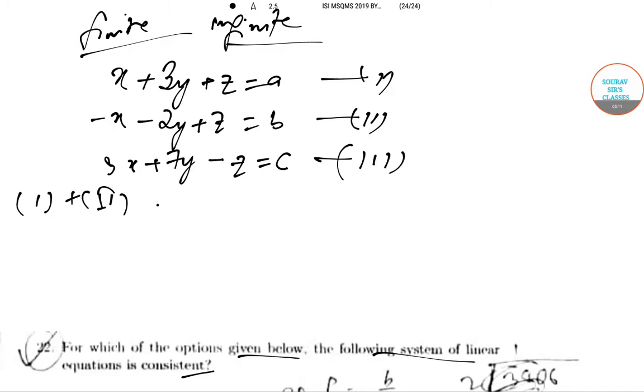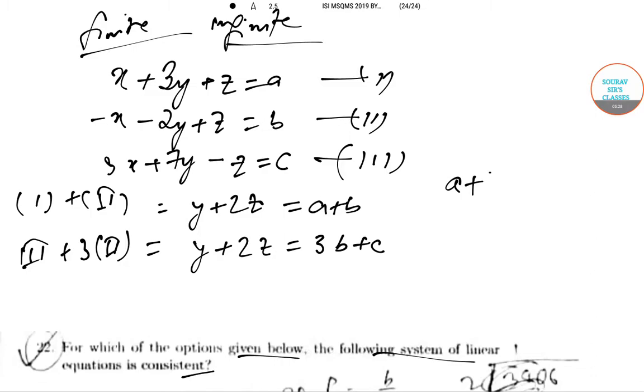On adding equations 1 and 2, we will get y + 2z = a + b. Multiplying equation 2 by 3, then adding to equation 3, we get y + 2z = 3b + c. Now for a solution to exist, a + b must be equal to 3b + c.